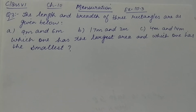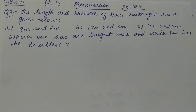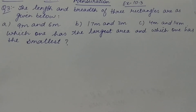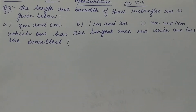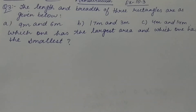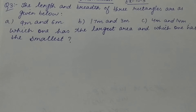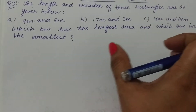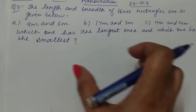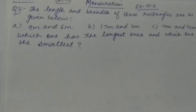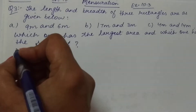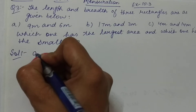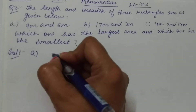Let's start question number three of Exercise 10.3. The question gives us the length and breadth of three rectangles, and we have to find which one has the largest area and which one has the smallest area. So let's start — first of all we'll find the area of the first rectangle.